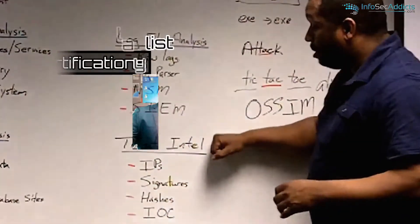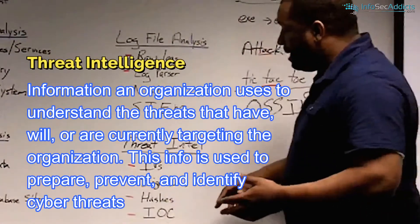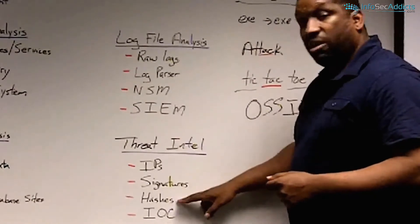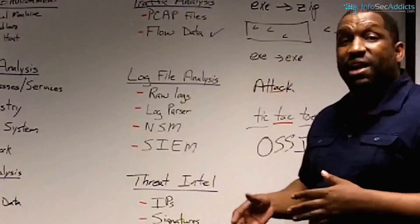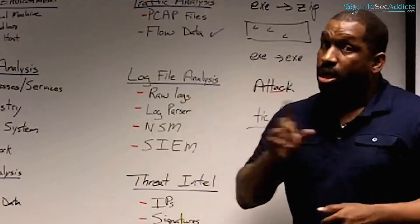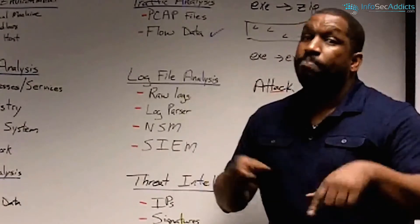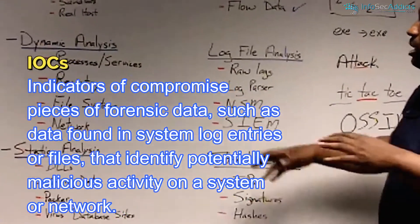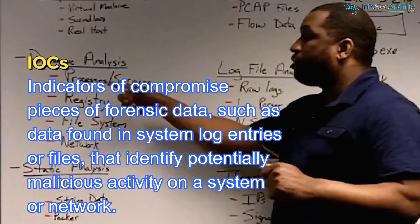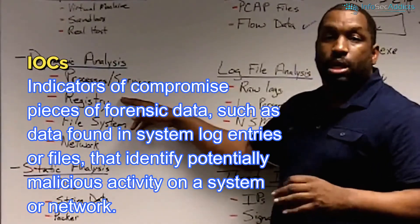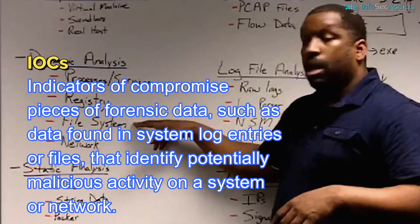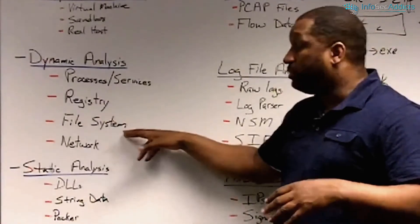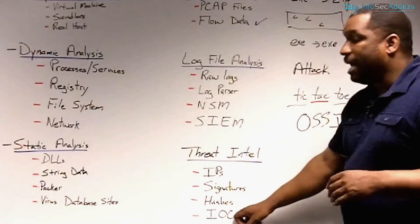The last thing is threat intel. With threat intel, what you're going to get is a list of bad IP addresses, signatures of attacks, and hashes of files. Somebody finds a bad file, they take an MD5 or SHA-1 hash of it and say, if you ever see this file, that's a particular hacker group's tool. You're also going to get what are called IOCs - indicators of compromise. These include things like what processes or services it creates, what registry keys it sets, what it leaves on the file system, or what IPs it communicates with locally or remotely.